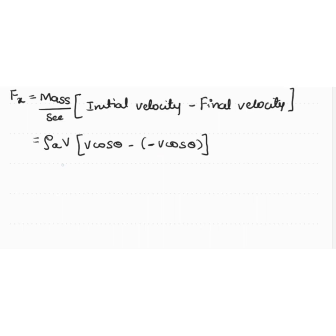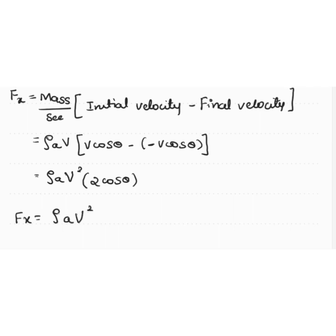Taking v common, we get ρ·A·v². The expression becomes cosθ − (−cosθ) = cosθ + cosθ = 2·cosθ. Therefore: Fx = ρ·A·v²·2cosθ. This is the equation for the force exerted in the direction of the jet.